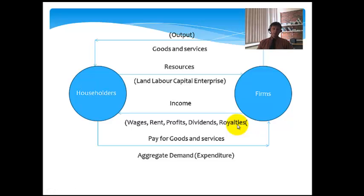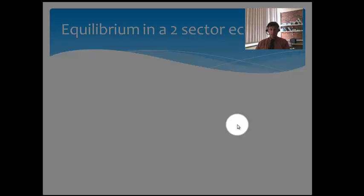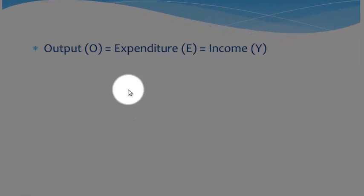What happens in equilibrium in a two-sector economy? The output stream is equal to the expenditure stream is equal to the income stream. Now, that's a really important concept to understand.